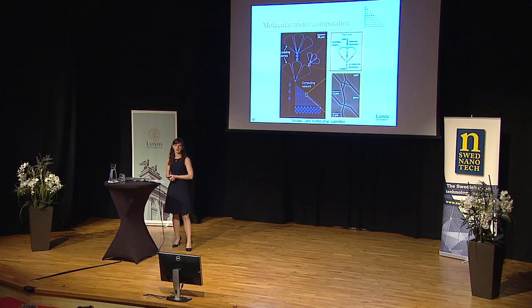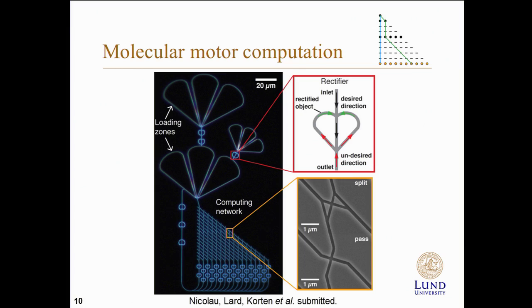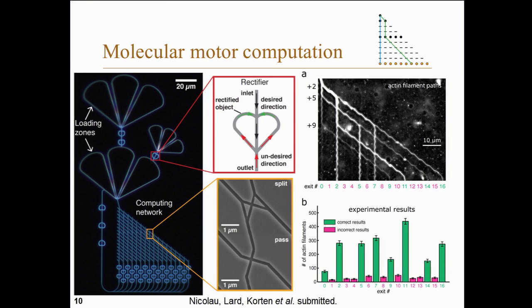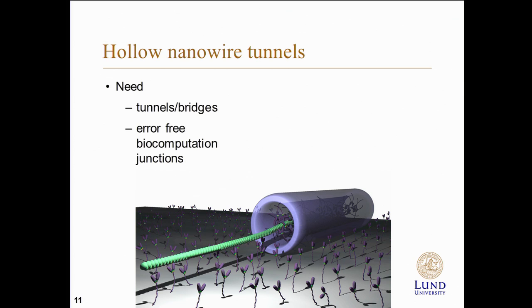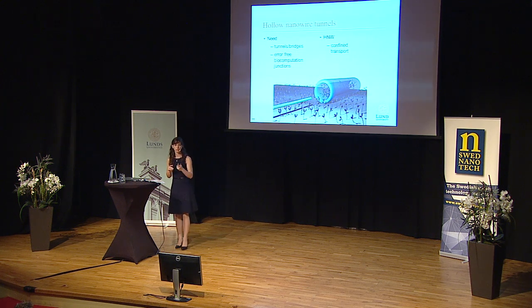This is really interesting because in the future, what we plan is to really scale up these type of networks and see if we can reach beyond the barrier of modern computing, or even make a combination of those things in order to solve really difficult problems. These filaments actually do a really good job on a small scale, though there are some errors. One suggestion we've come up with is to use tunnels — nanowires that have been etched out with a core. These hollow nanowires can be put into these devices and used to really confine the motion of the filaments as they traverse through these junctions.